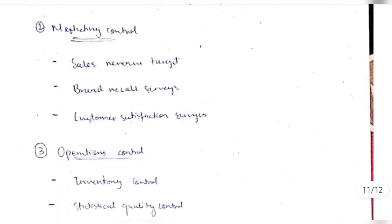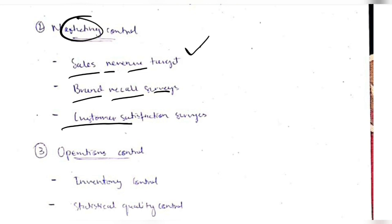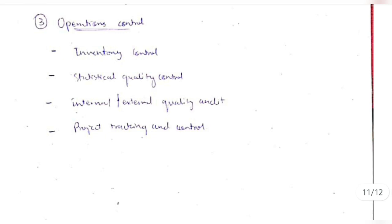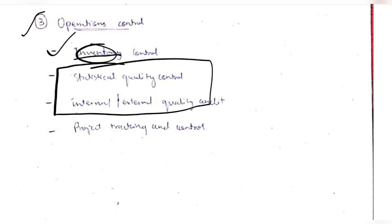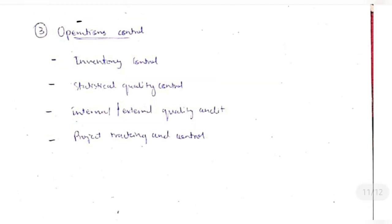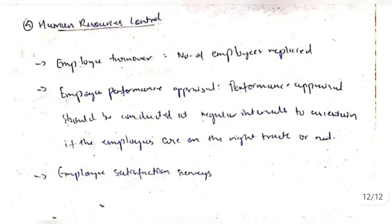The second domain is marketing control, which involves sales revenue targets set daily, weekly, monthly, and yearly to track progress, as well as brand recall surveys and customer satisfaction measurement. The third domain is operations control, which covers inventory control of tools and equipment, quality measurement and analysis, and project tracking and control.